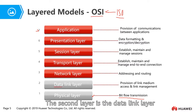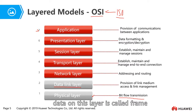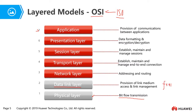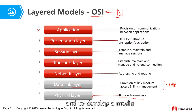The second layer is the data link layer. In the data link layer, the data begins to have structure. This structured data is called a frame. In this layer, the frame has an address to identify the destination. It also defines a mechanism for how to use the media.